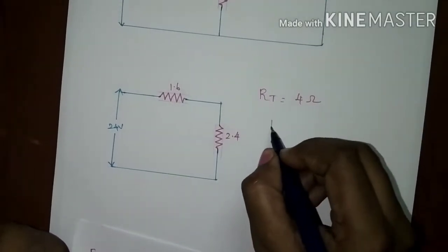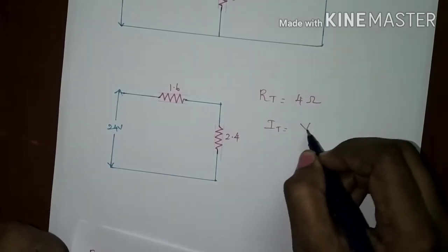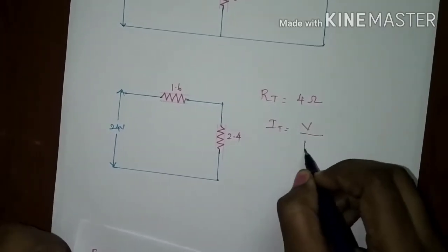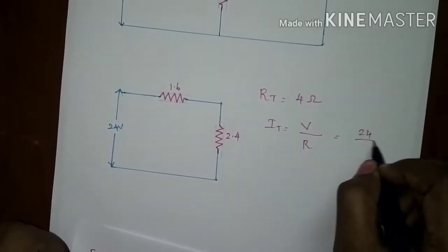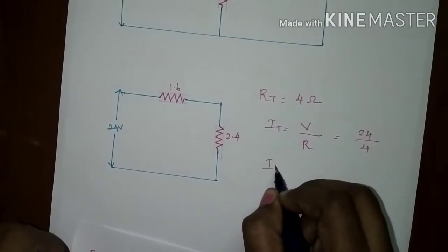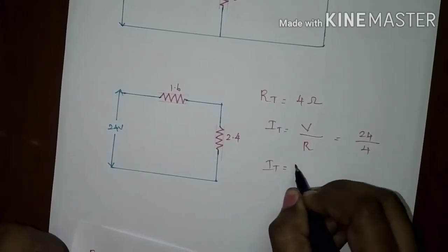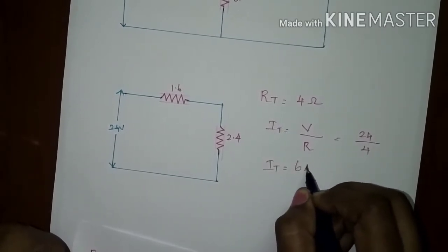Now, to find the total current, it is very simple by using Ohm's law: V divided by R. V supplied is 24, R is equal to 4 ohms, so I total current will be 6 amperes.